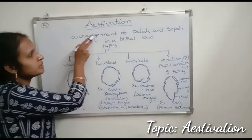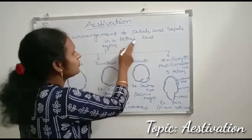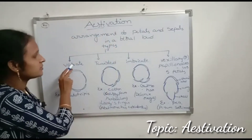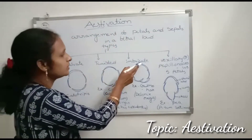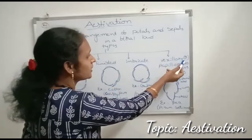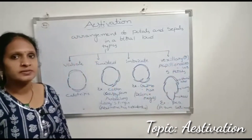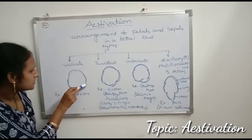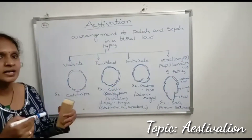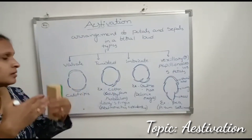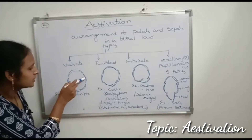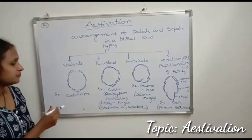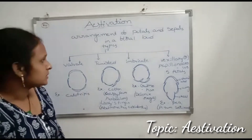Once again: estivation means the arrangement of petals and sepals in a floral bud. Types: valvate estivation, twisted estivation, imbricate estivation, and vaxillary or papilionaceae estivation. Valvate estivation means arrangement of petals and sepals where their margins just touch one another without overlapping. Example: Calotropis.